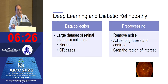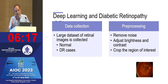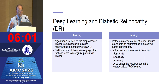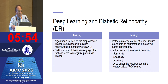For deep learning applied to diabetic retinopathy, first you collect large datasets of both normal and diabetic retinopathy cases. Then preprocessing is done — removing noise, adjusting brightness and contrast, cropping the region of interest, and labeling features such as hemorrhages, microaneurysms, and hard exudates. The algorithm is then trained on preprocessed images using a convolutional neural network (CNN), a type of deep learning algorithm that learns to recognize patterns in images.